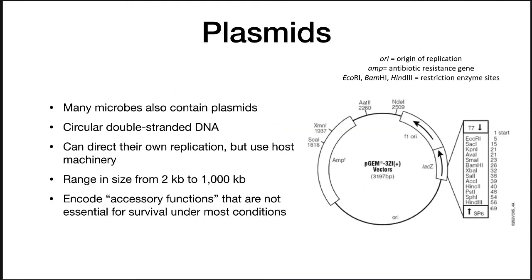Many microbes also contain plasmids, which is more of a bacterial and archaeal thing — it is unusual for eukaryotes to have plasmids, though yeast are a notable exception. Plasmids are circular double-stranded pieces of DNA, though linear plasmids exist. They can direct their own replication but use the host machinery to actually do the copying. They range in size from 2 kb to about 1,000 kb and encode accessory functions that are not essential for survival under most conditions — that's a very important distinction between a chromosome and a plasmid.